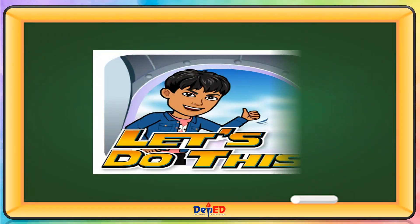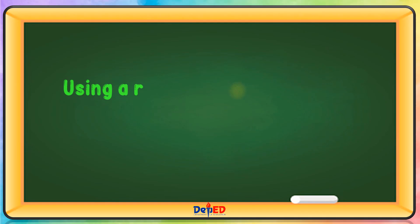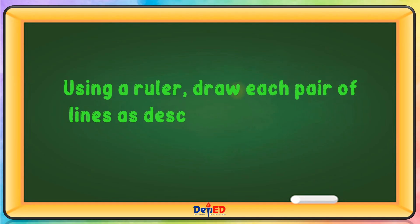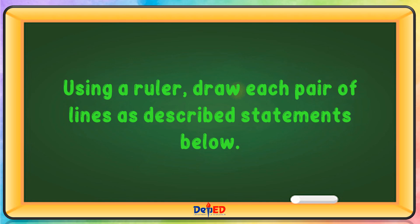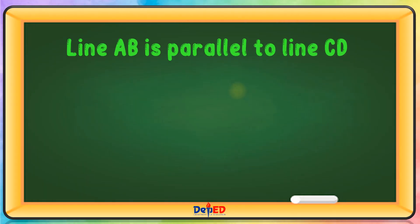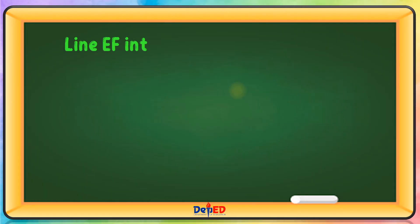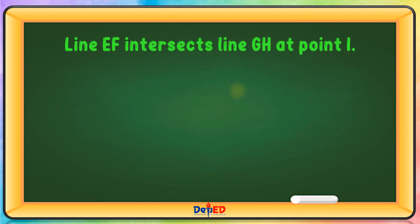Let's do this. Using a ruler, draw each pair of lines as described in the statements below. Line AB is parallel to line CD. Line EF intersects line GH at point I.